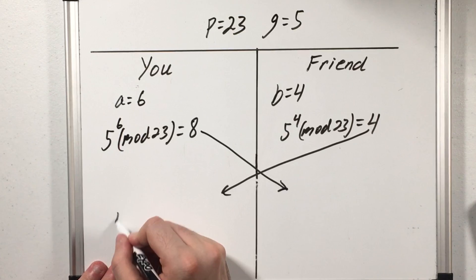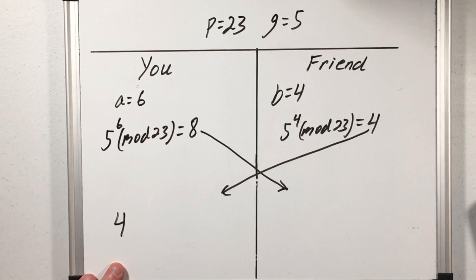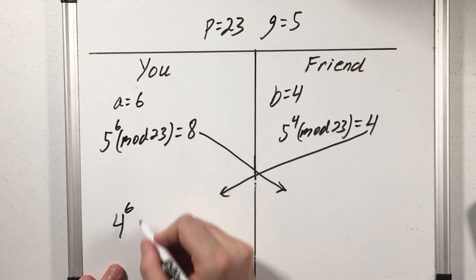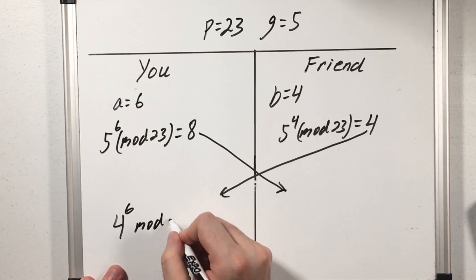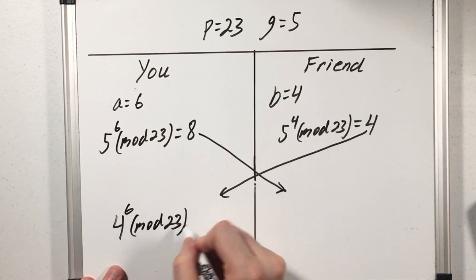So now I have my friend's number which I will raise to the secret number I thought of of 6 and do that mod 23 and I see this is congruent to 2.